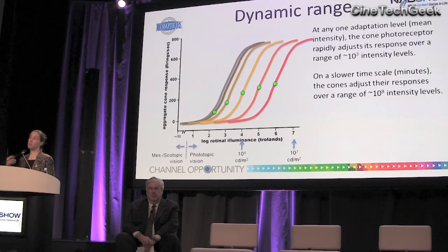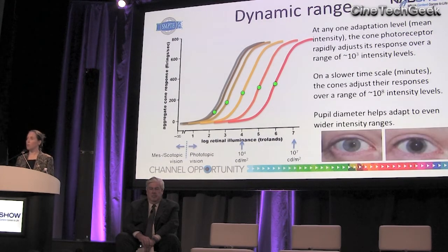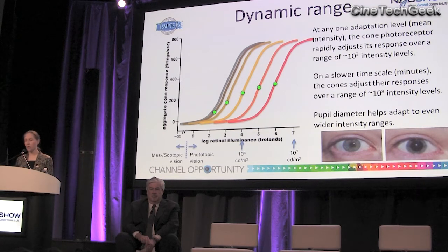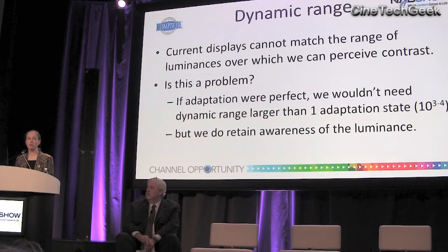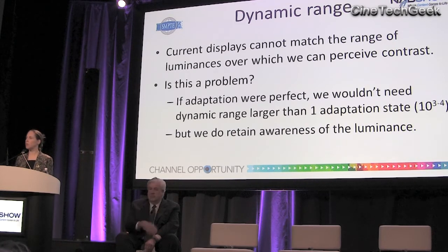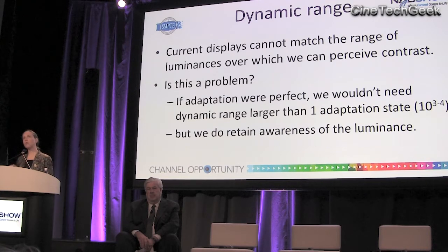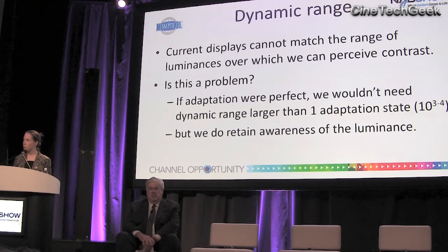Here I'm talking about the luminance reaching the cone at the back of the eye. Your pupil also adjusts — stopping down in bright light and dilating in dim light — which helps adapt to different luminances, so the human visual system as a whole can adapt to an even wider range, reaching that billion-fold level. Current displays obviously can't match the range of luminances over which we can perceive contrast. If cone adaptation were perfect, it wouldn't be a problem — the display would only need to cover one cone's adaptation state, so maybe 10^4 would be enough. But in practice, although we do adapt, we remain aware of the adaptation. I can read perfectly well in a dim Newcastle office or on a bright sunny Las Vegas day, but I am aware of the difference in luminance.